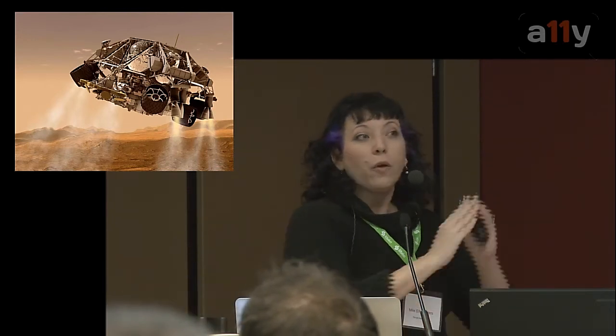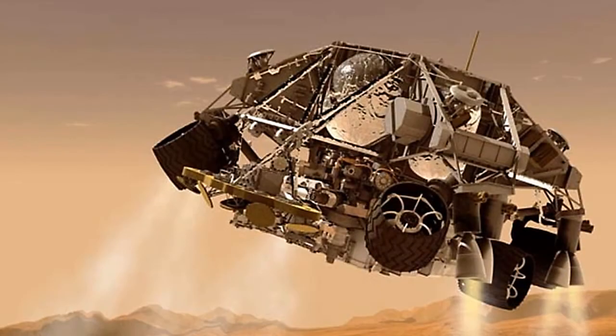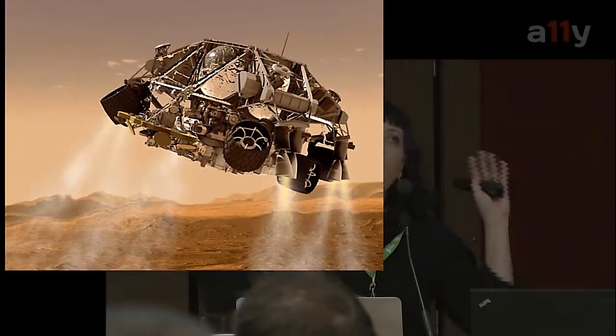It's called Seven Minutes of Terror because there's a point in the landing process where they have a total blackout and no control over what happens to the vehicle. They have all these preparations, then they cross their fingers, wait, hope, and there's silence for seven minutes. There are six vehicle configurations, 76 pyrotechnic events, and over 500,000 lines of source code just to land it — with zero margin of error.